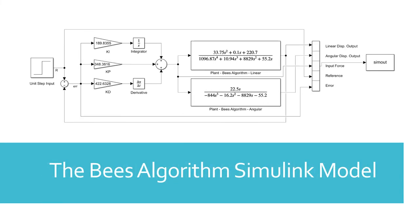The bee colony Simulink model utilizes a proportional gain, kp, of 348.3816, an integral gain, ki, of 189.8355, and a derivative gain, kd, of 422.6328.